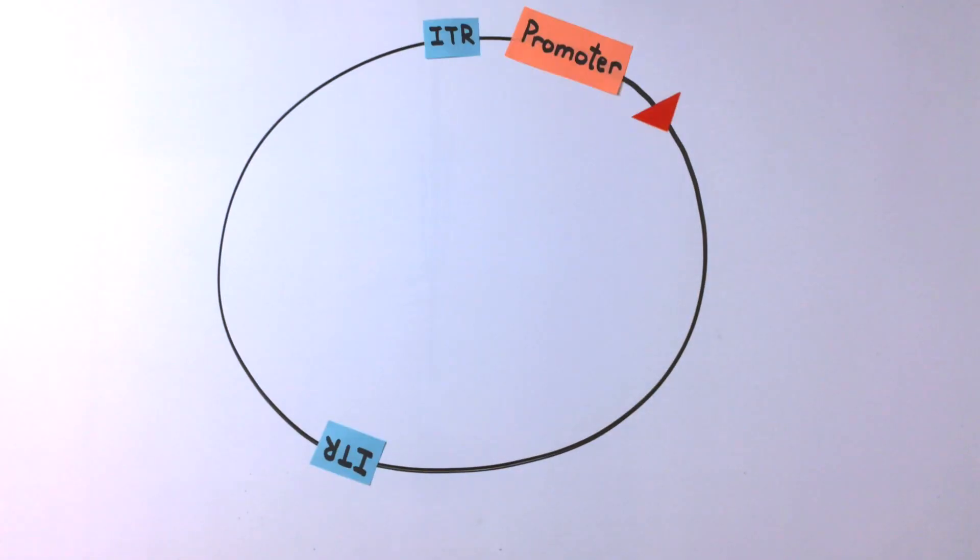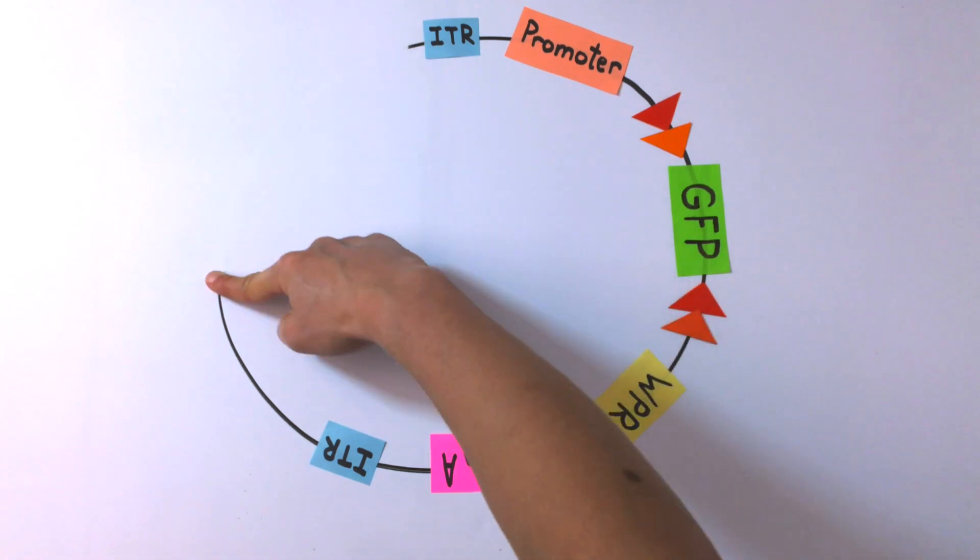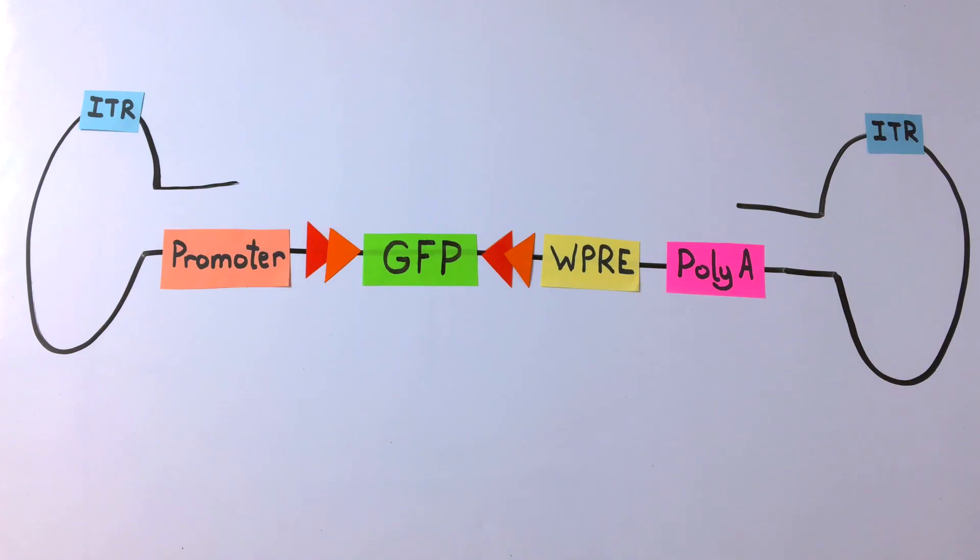This video has shown you how to identify some of the key elements in an AAV transfer plasmid. Remember that there are many possible element combinations which will depend on the purpose of your AAV.